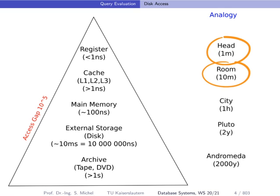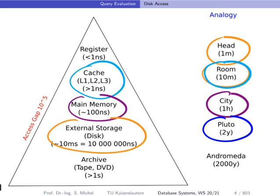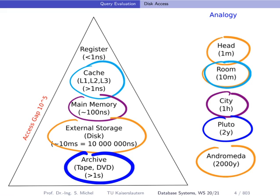Comparing access to information stored in a room — analogous to the cache — to main memory at 100 nanoseconds corresponds to having information stored somewhere in a city, where you have to go by bus or car to pick it up. Now we have the access gap of 10 to the 5 between memory and external storage, corresponding to the difference between finding information in your city compared to finding information on planet Pluto, which takes two years to go and retrieve. Going to archive or tape or DVD takes more than a second, and the analogy is that this information would be in Andromeda — 2,000 years cost to retrieve.